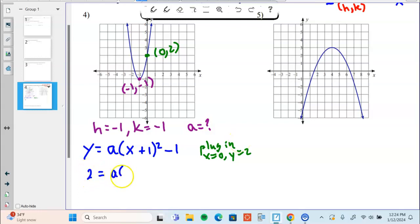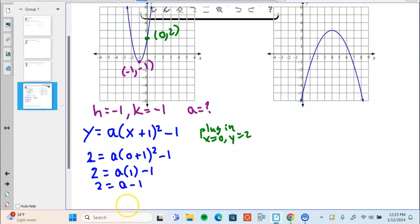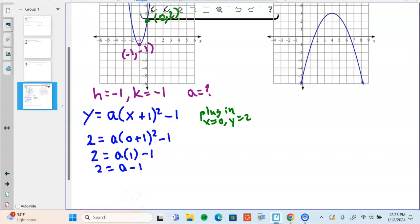So two equals a times zero plus one squared subtract one. I could add one to both sides right now or I can work with it here. Two equals a times zero plus one is one, one squared is still one. Two equals a minus one. What I can't do is make one minus one into zero because I have to multiply before I subtract. So a times one is a. Now I will add one to both sides - a is three.